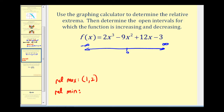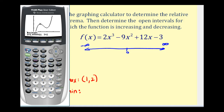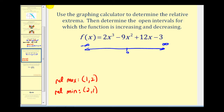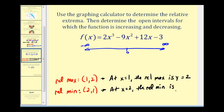Now let's find the relative minimum. Press second trace again, then option three for minimum. Move closer to the low point but remain on the left side, press enter, then move to the right side and press enter. Move a little bit closer, then press enter again. The relative minimum is the point two, one. This implies that at x equals one, the relative max is y equals two, and at x equals two, the relative min is y equals one. These x values will help us determine the intervals for which the function is increasing and decreasing, so let's plot them on our number line — relative max at x equals one, relative min at x equals two.